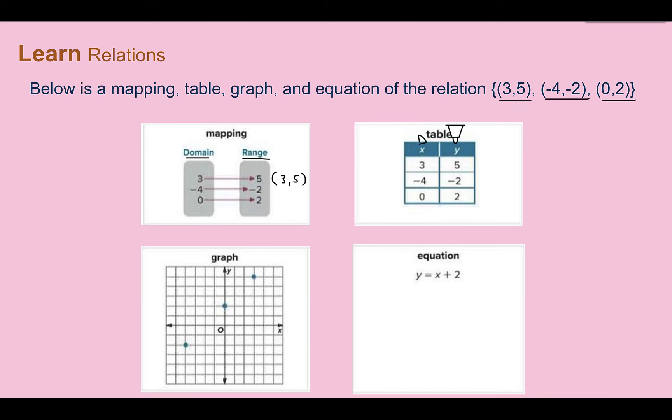Our x is our domain, y is our range. For the graph, it's a little more difficult to tell, but these coordinates that are graphed here are the same ones. So if this is (3, 5), 3 over, 5 up. This one is 0 over and 2 up. And the last one was at negative 4 over and 2 down. So again, we have the same three ordered pairs, this time graphing.